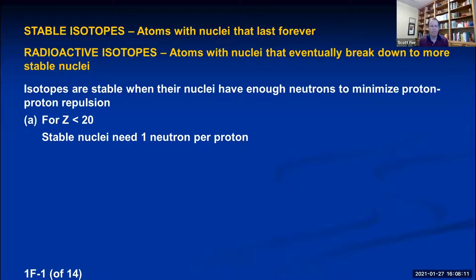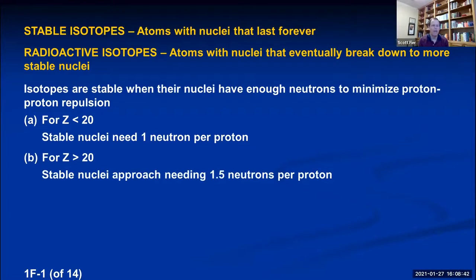Neon has an atomic number of 10, meaning 10 protons. To be stable, it would need 10 neutrons as well, giving a mass number of 20 — so neon-20 would be a stable isotope. But as atoms get bigger and the atomic number exceeds 20, you start needing more neutrons because the positive charge is getting too large. As atoms get bigger, the ratio increases, and the biggest atoms on the periodic table have about 1.5 neutrons for every one proton.